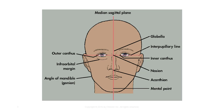The glabella is located in the MSP and lies between the eyebrows. The nasion is inferior to the glabella and has an indentation just superior to the nasal bones. The inner canthus of the eye is where the eyelids meet medially, while the outer canthus is where they meet laterally.